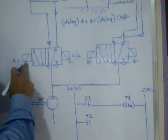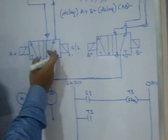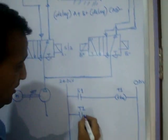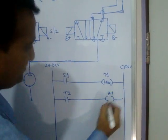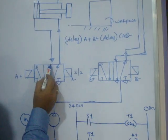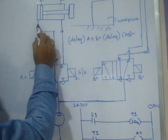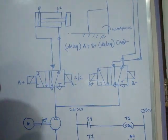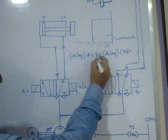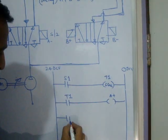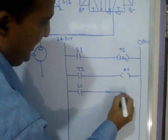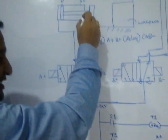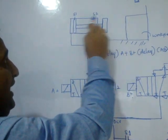When the timer turns on after 6 seconds, the next task is A+: the solenoid actuates, the valve position changes, and air enters the piston side, pushing it forward. After A+ actuates, the piston travels to S2. When the piston reaches S2, there is no intermediate delay — the next task immediately is B+, which activates the second cylinder.